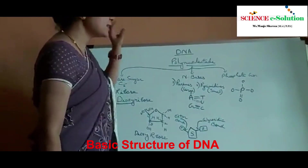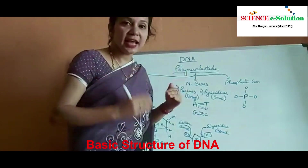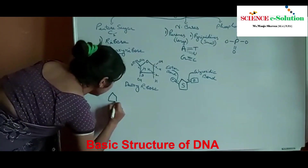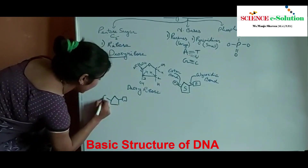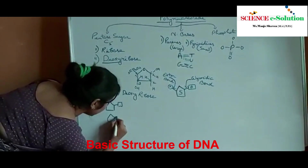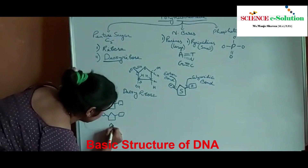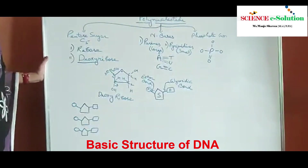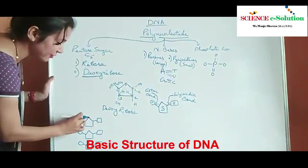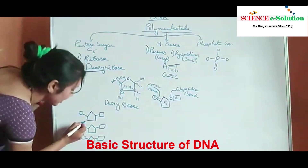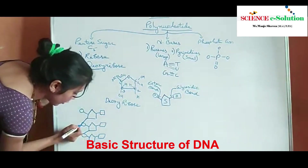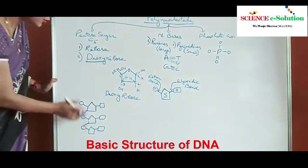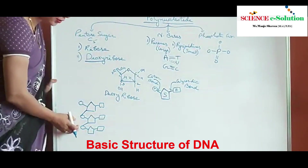Now the structure of one nucleotide is clear. In DNA, which is a polynucleotide chain, how are these nucleotides attached to form a polynucleotide? This is nucleotide number one, nucleotide number two, and nucleotide number three. The phosphate group is attached once to the 5' position and the other to the 3' position. This phosphate molecule attaches to the third carbon of the sugar above and to the fifth carbon of the sugar below it. So this is a polynucleotide chain where many nucleotides are attached.